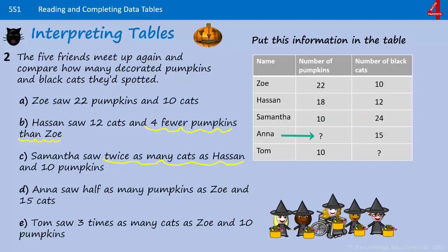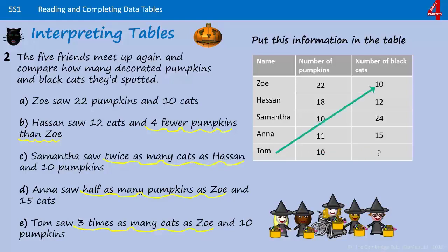The next question mark is how many pumpkins Anna saw. Anna saw half as many pumpkins as Zoe. Zoe saw 22 pumpkins, which means Anna must have seen 11. And finally, how many black cats did Tom see? Tom saw three times as many cats as Zoe. If Zoe saw 10 cats, that must mean Tom saw 30.